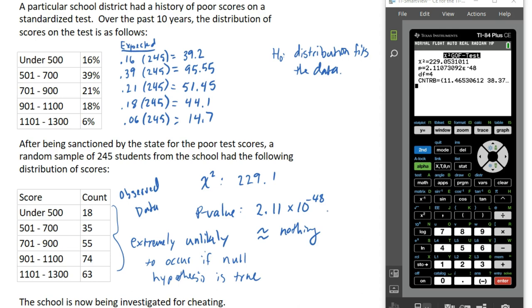With this small of a p-value and the likelihood of these test scores just occurring randomly or organically based on whatever initiative the school put in place, that's extremely unlikely to occur. So an investigation would be warranted and we would start probably interviewing people to see if in fact any sort of cheating occurred. You can use a goodness of fit test to see how likely strange results are and if there might be foul play.